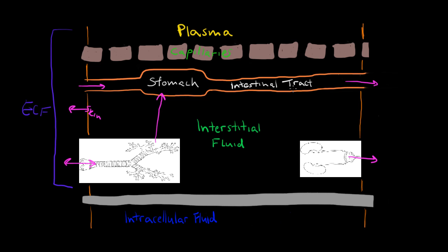The stomach pumps in digestive juice, and the intestines are absorbing and secreting. So the stomach is secreting and the intestinal tract is both absorbing and secreting. These are multiple ways of entering, transporting, and exiting fluids in the body.